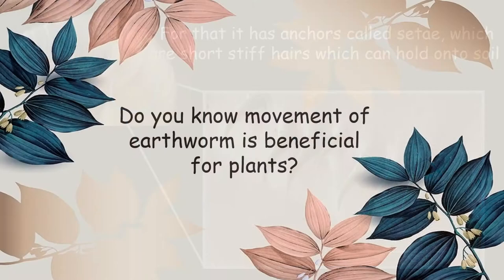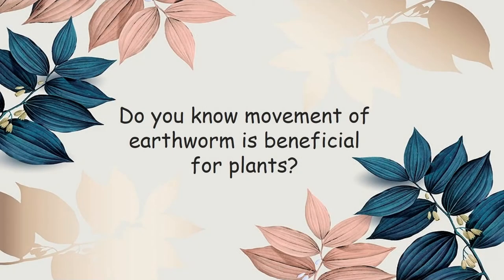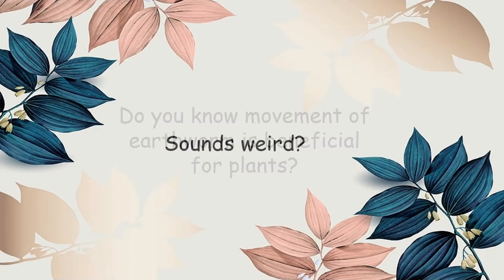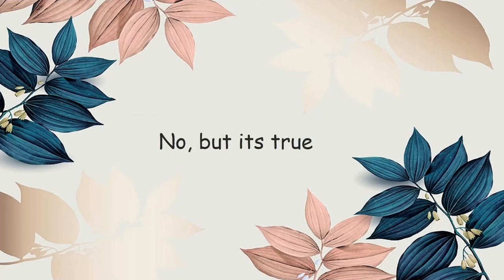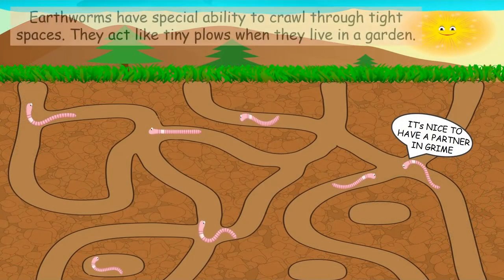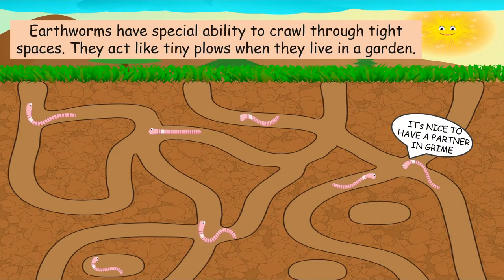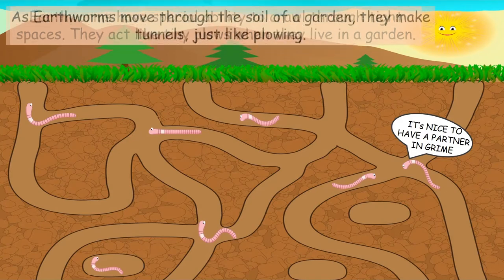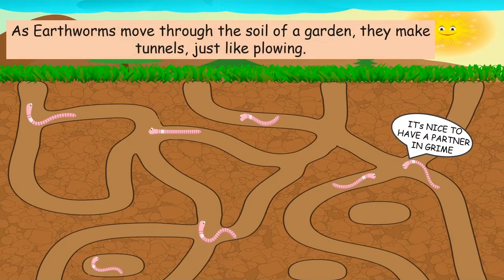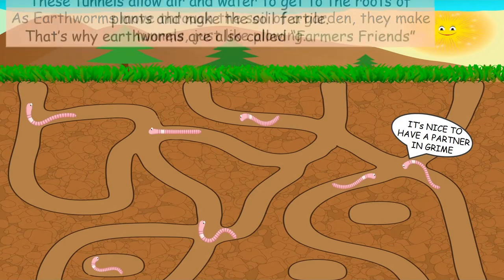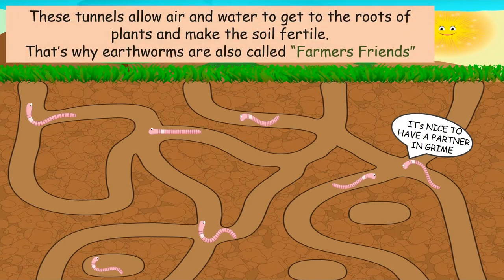Did you know that the movement of earthworms is beneficial for plants? Earthworms have a special ability to crawl through tight spaces. They act like tiny ploughs when they live in a garden. As earthworms move through the soil, they make tunnels — just like ploughing. These tunnels allow air and water to get to the roots of plants and make the soil fertile. That's why earthworms are also called farmers' friends.